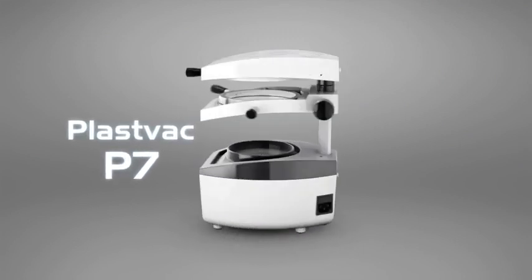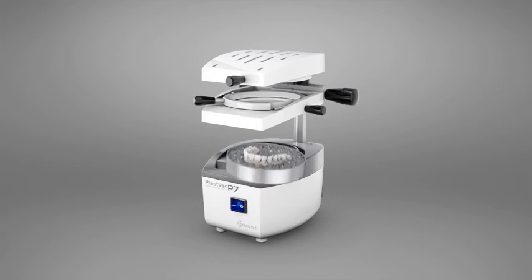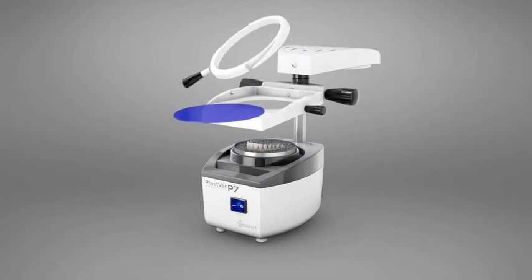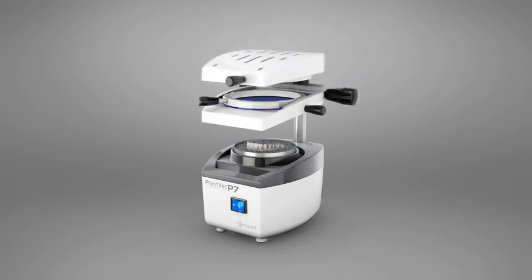PlastVac P7. The vacuum forming system is a process where a sheet, which can be of different materials, is heated and conformed on a plaster model by vacuum to give the sheet the desired shape.